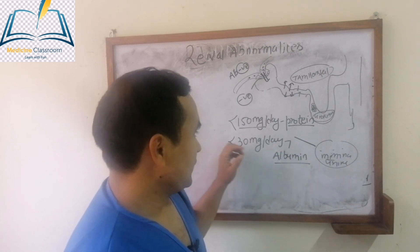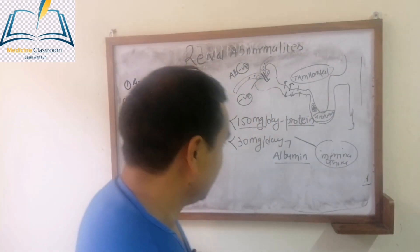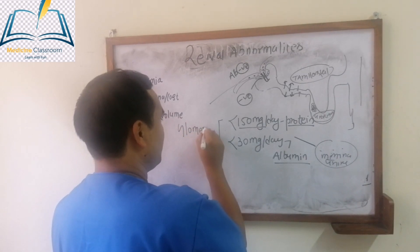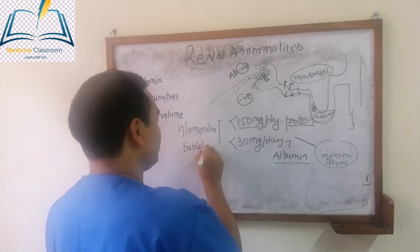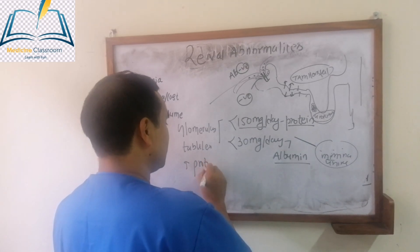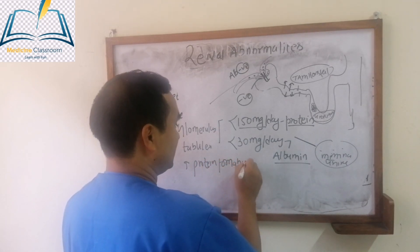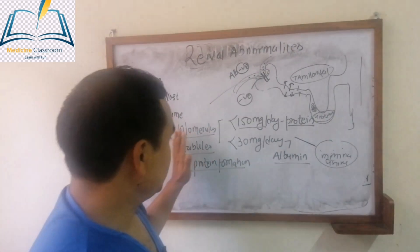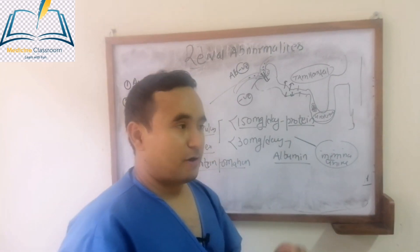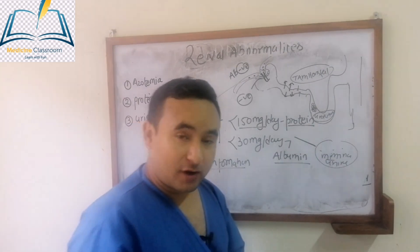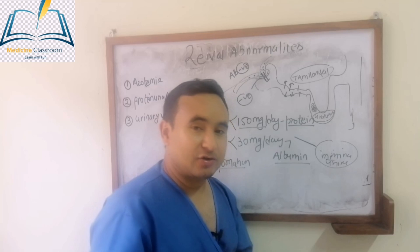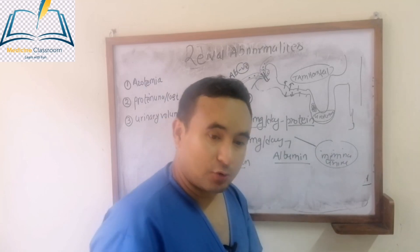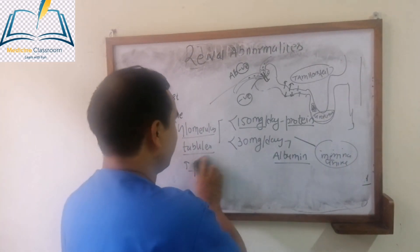But if there is more proteinuria, when will we see it? If there is a problem in the glomerulus, or a problem in the tubules, or if there is excessive protein formation in our system — like in the case of multiple myeloma — then we see protein in the urine. That's why if you see protein in the urine, it usually suggests disease of the glomerulus or tubules, and we should always be aware of this condition.